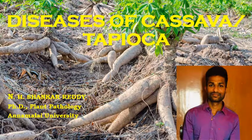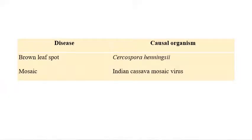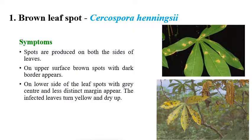We'll see the list of important diseases in cassava and tapioca. My name is Jenna Shankaradi and I am doing a PhD in Plant Pathology. The important diseases are brown leaf spot, caused by Cercospora henningsii, and mosaic, caused by Indian Cassava Mosaic Virus. Now we'll see each in detail.